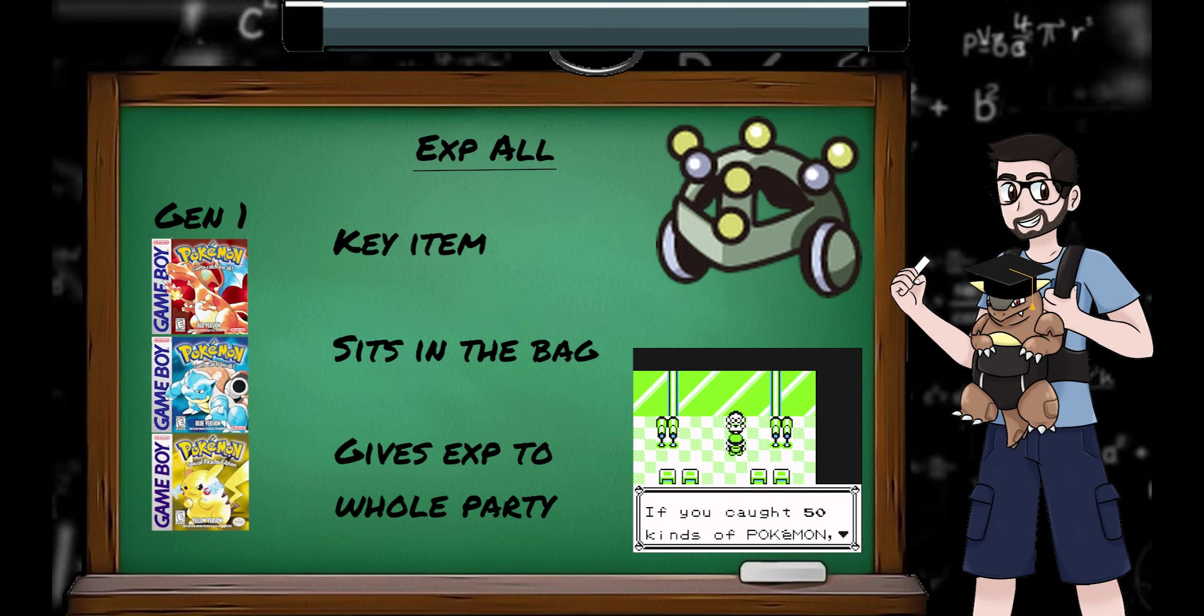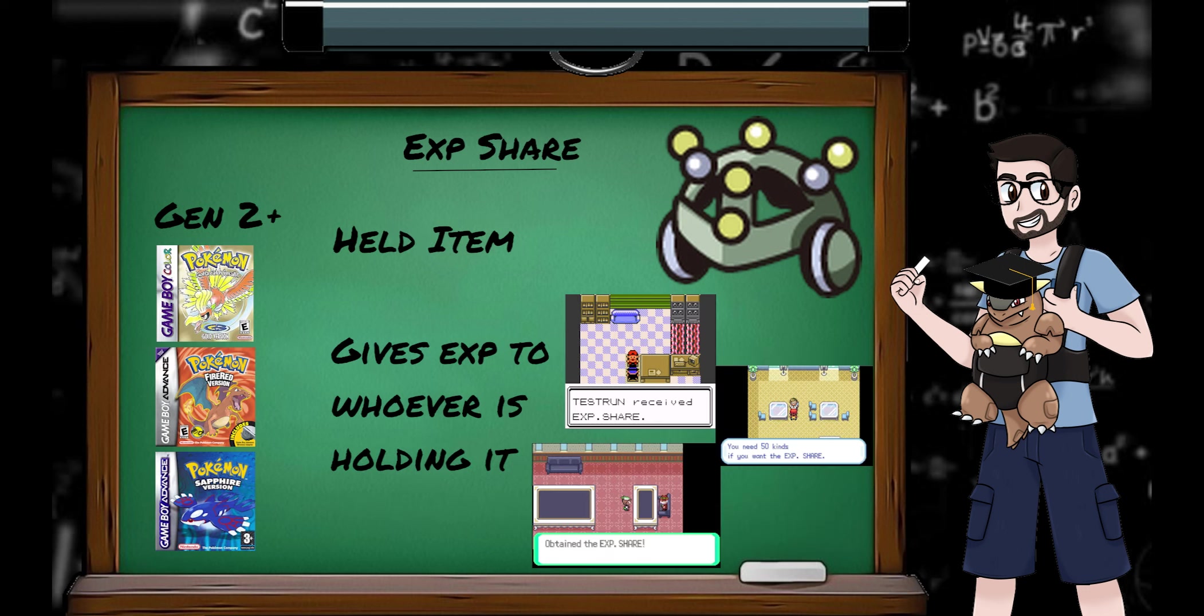If you defeat an enemy with the XP all in your bag, all your party Pokemon get a split of the XP pot, whether they participated or not. In generation 2 onwards it's called the XP share, and it's now a held item. Pokemon holding the XP share will receive a split of the XP pot, whether they participated or not.